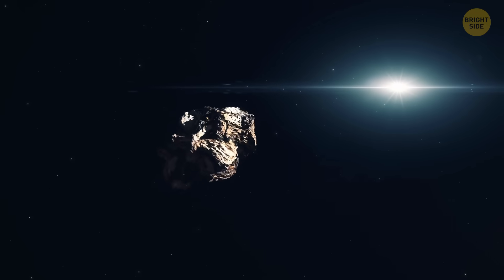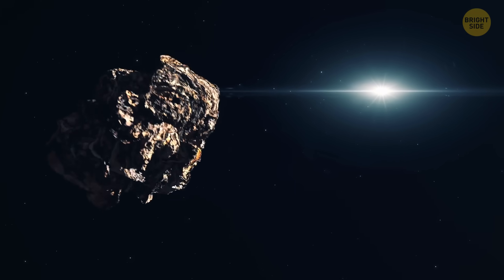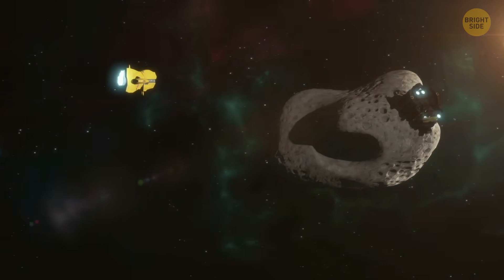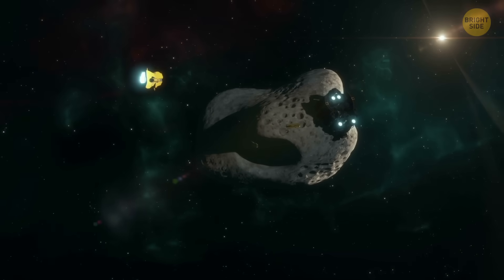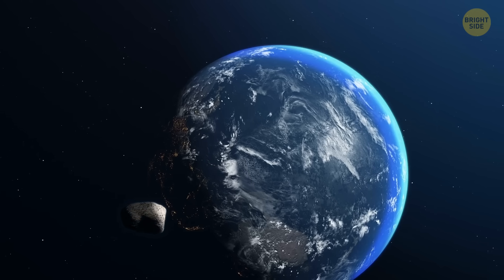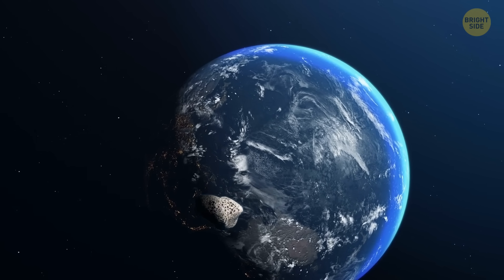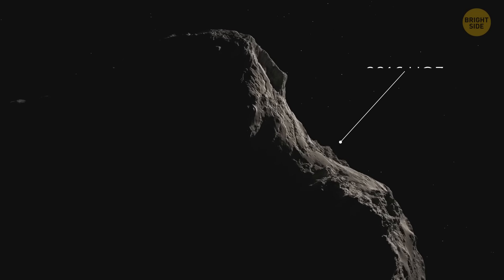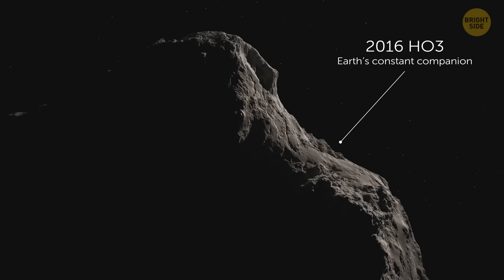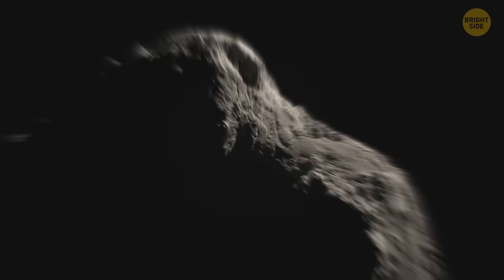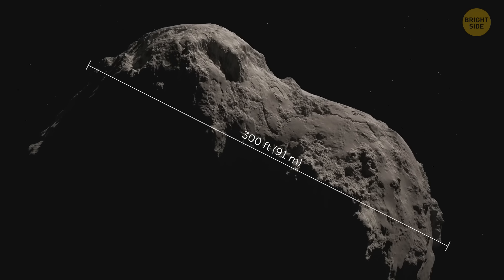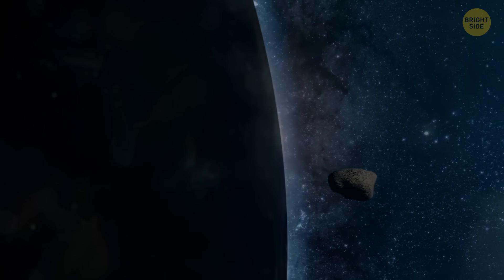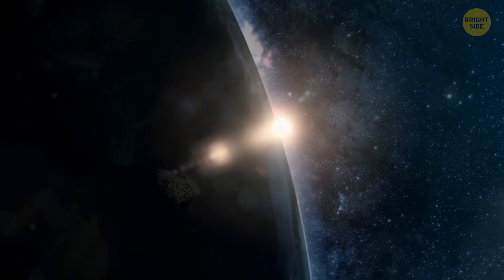Quasi-moons are closer than other asteroids on the same path, and it would be easier to reach them. One day, they might be used as stepping stones in space exploration. Earth has had a few of these tagalongs before. One of the most famous is 2016 H03, nicknamed Earth's Constant Companion. It's only about 300 feet wide, but it's been keeping pace with us for nearly a century. Researchers say it might keep up for centuries more.